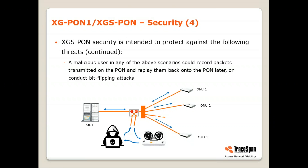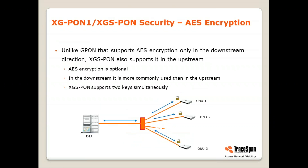Having seen these four risks, how does the standard propose to address them? The first mechanism to address these risks is AES encryption. This is something which, as we explained in our GPON video, also exists in GPON, but there are some differences.